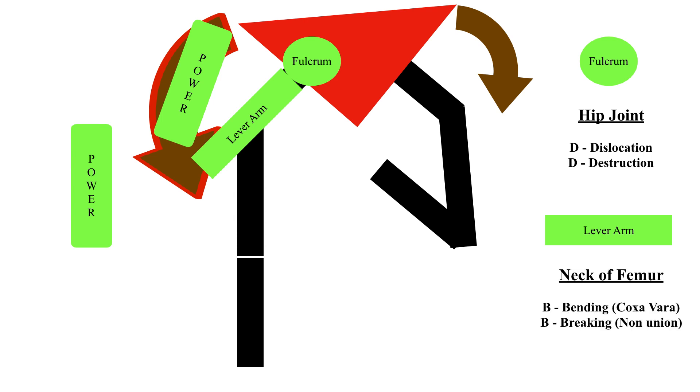The next two letters are DB. This DB stands in lever arm or the neck of femur. The first B is bending otherwise the orthopedic condition is called coxa vara and the second B stands for break that is non-union of neck of femur. So in coxa vara and non-union of neck of femur, the lever arm that supports the hip joint is defective resulting in a positive Trendelenburg test.